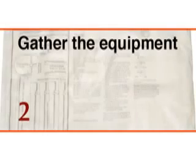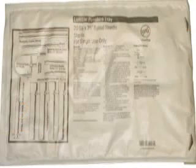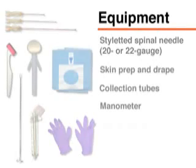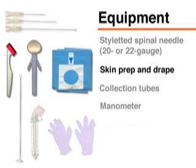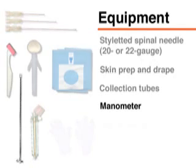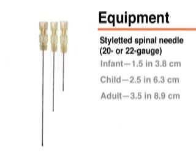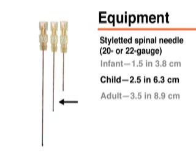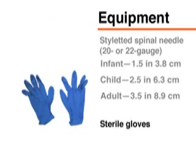Before performing the lumbar puncture, you will need a commercially available tray containing the necessary supplies: a spinal needle with a stylet, equipment for skin preparation, drapes, collection tubes, and in some cases a manometer. Typically, a 20 to 22 gauge needle is used, with the length ranging from 1.5 inches or 3.8 centimeters for infants to 2.5 inches or 6.3 centimeters for children.